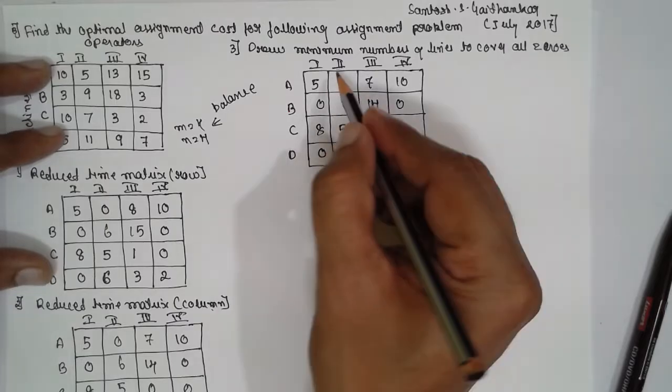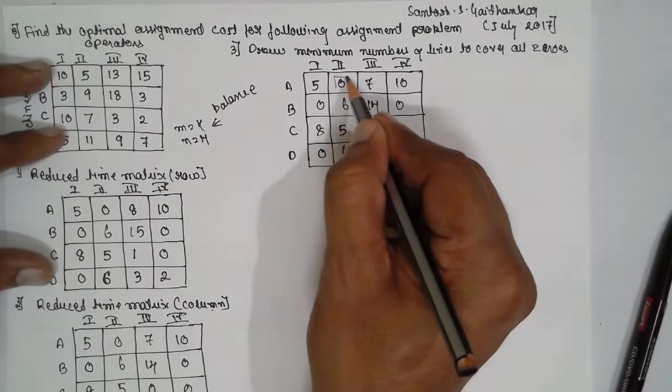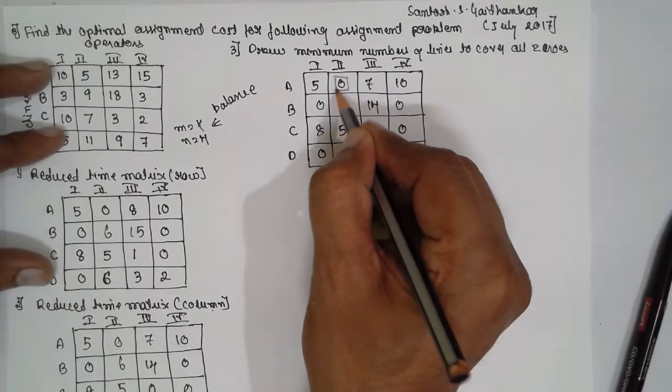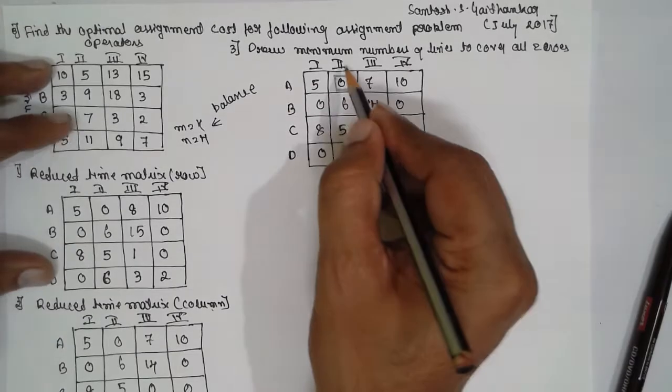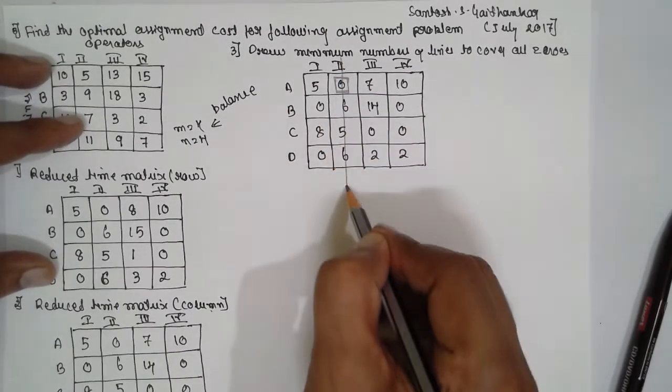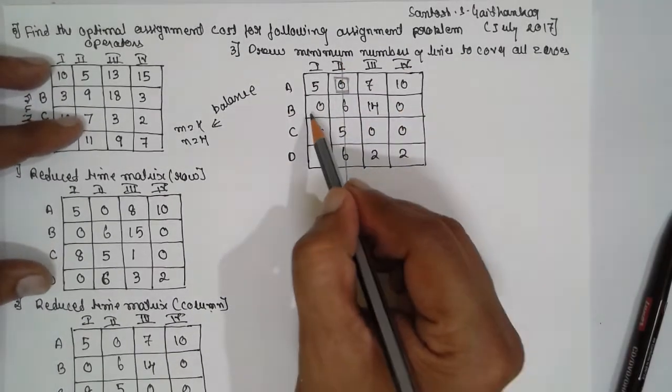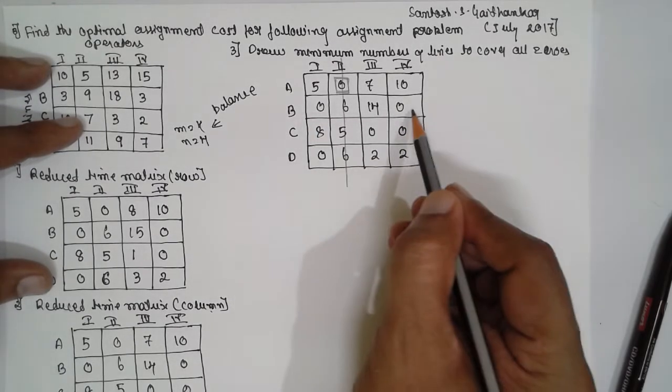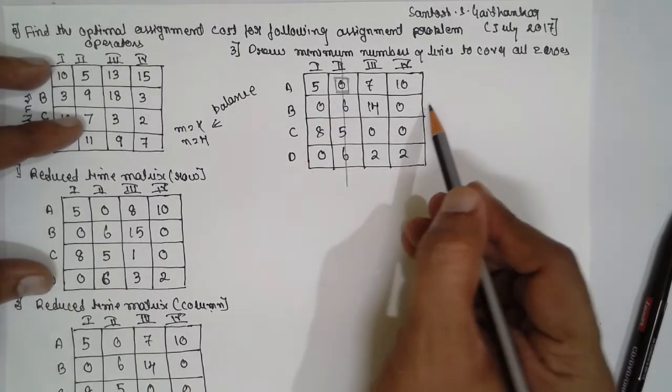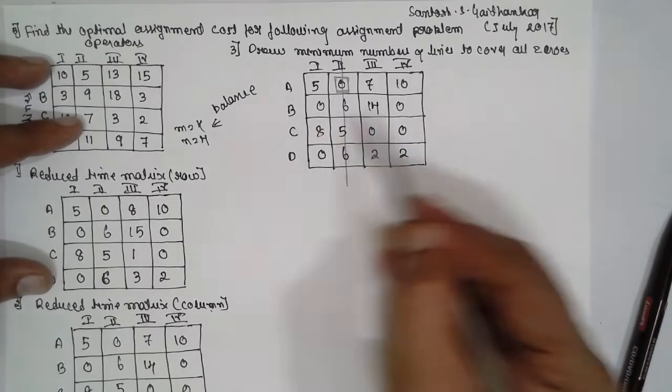It is a balanced problem. That means m is equal to 4 and n is equal to 4. If m is not equal to n, then you have to introduce dummy either in the row or in the column based upon the problem.